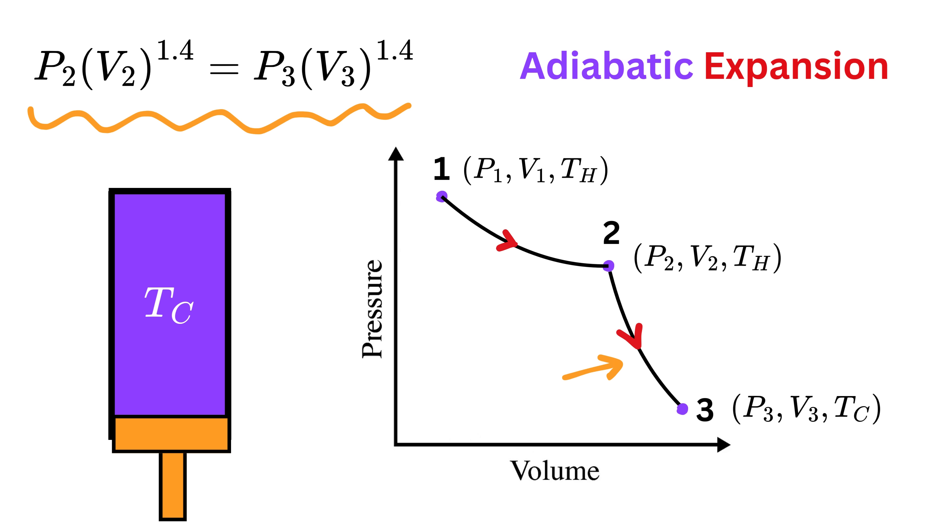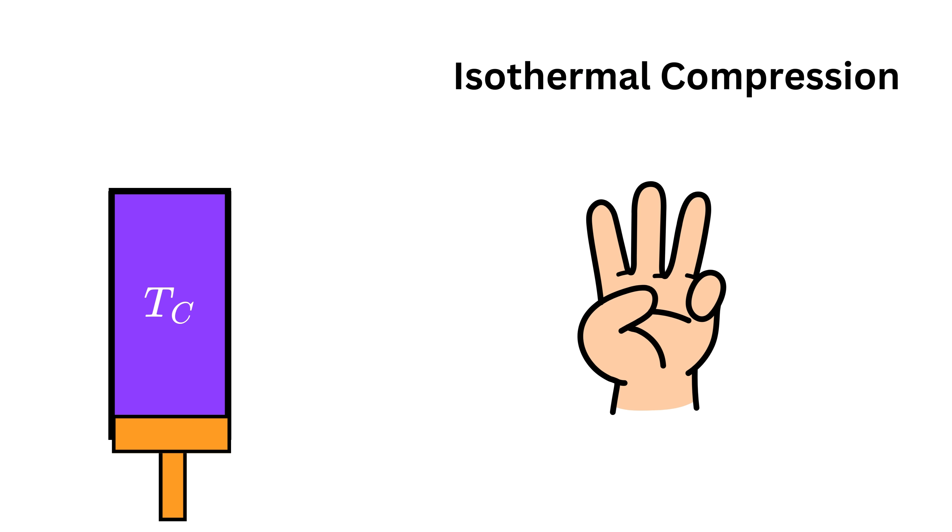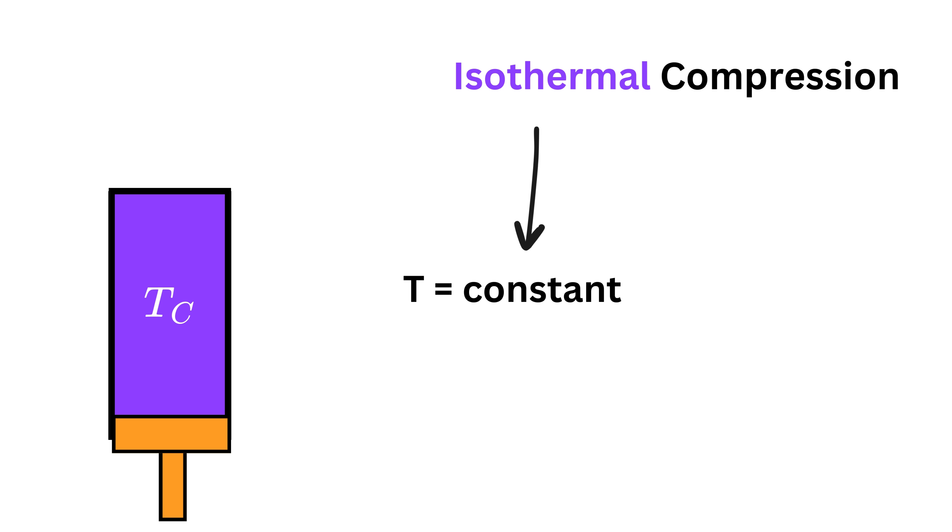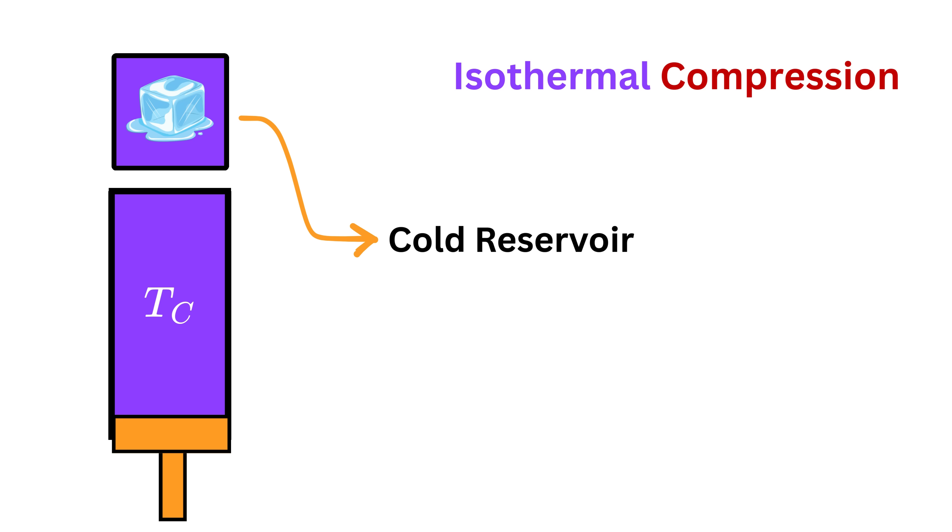The third step is called isothermal compression. Isothermal again means the temperature of the gas remains constant, and compression means the piston is being pushed inward, reducing the volume of the gas or compressing it.